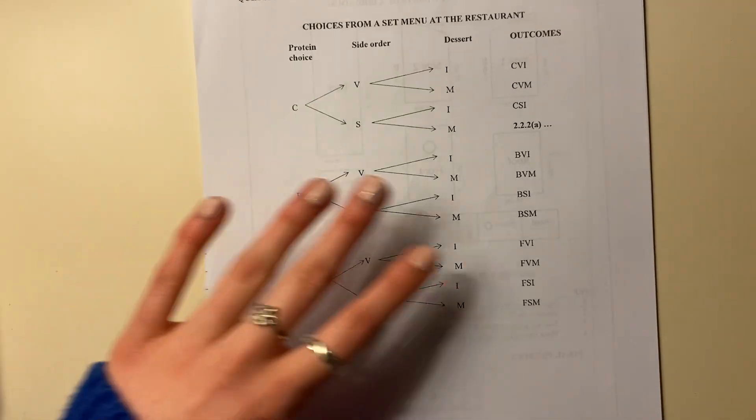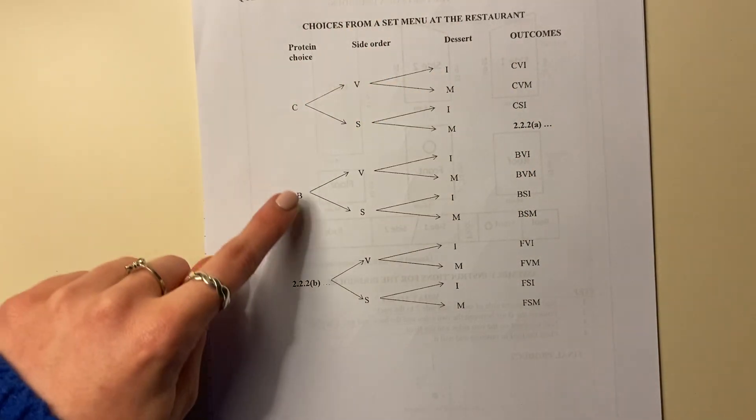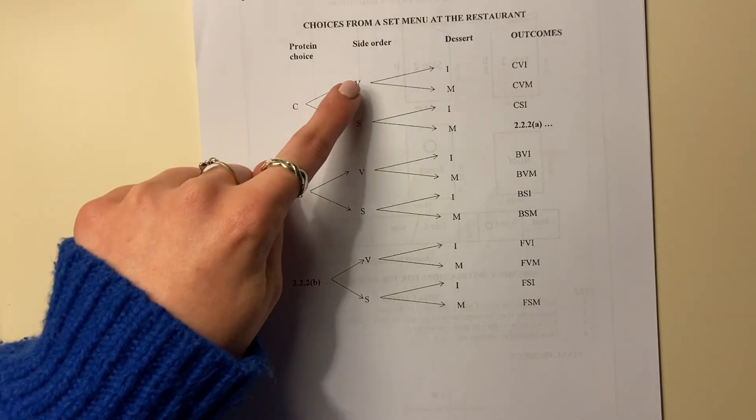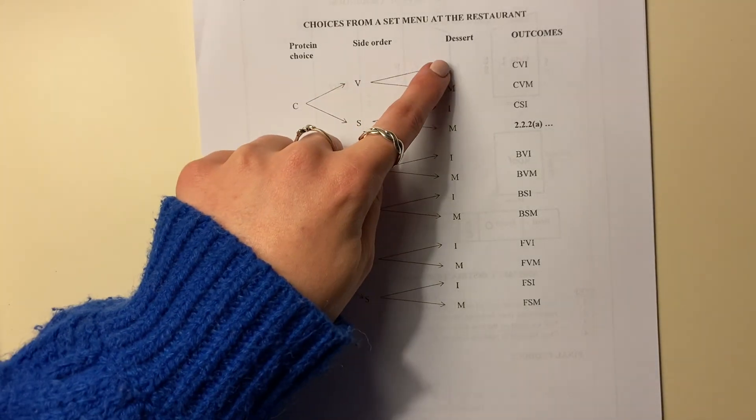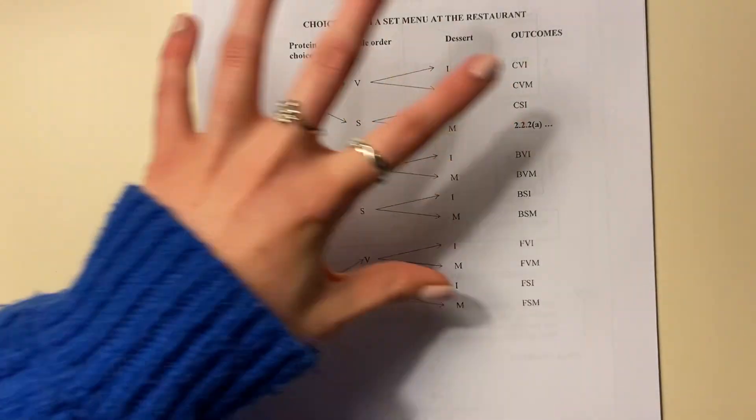There's Annex Tip B, and it's kind of drawn it out for you. You can have chicken, beef, or fish. Then that's vegetables or salad, and then you can have ice cream or marble pudding. So these are all your different options.